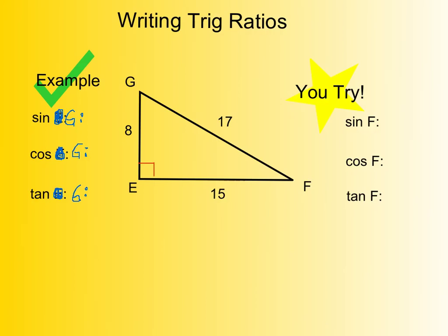Because opposite over hypotenuse — your opposite and your hypotenuse would be the same thing, which is kind of crazy. So we're just not going to worry about doing trigonometry from that right angle. We're going to deal with the other angles.